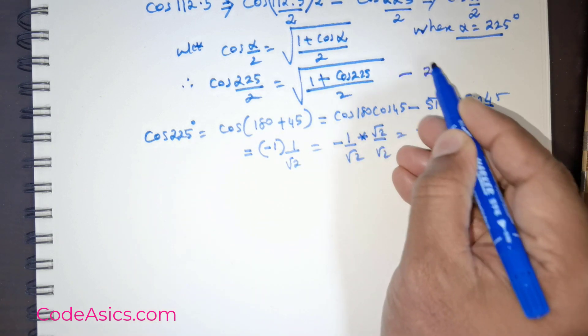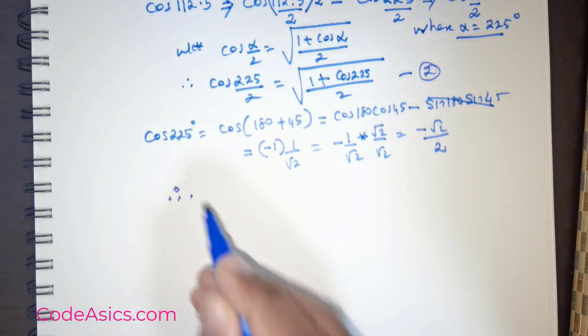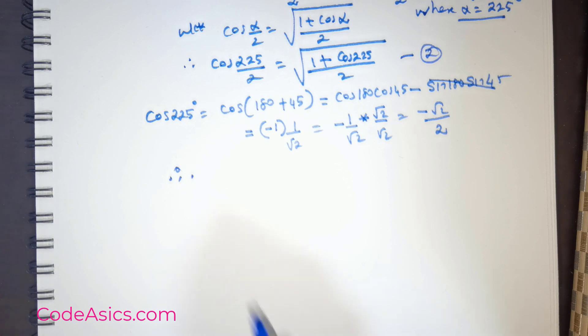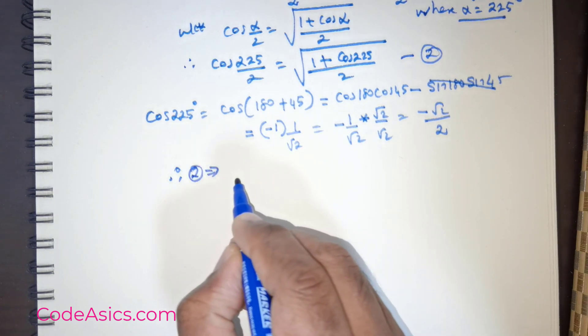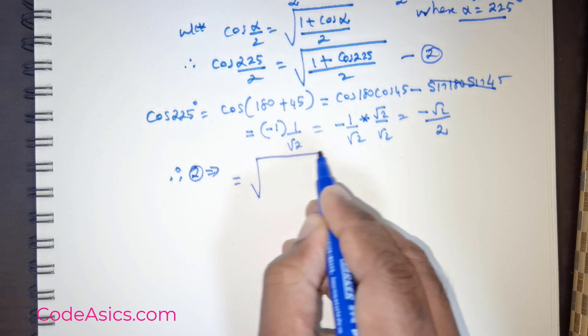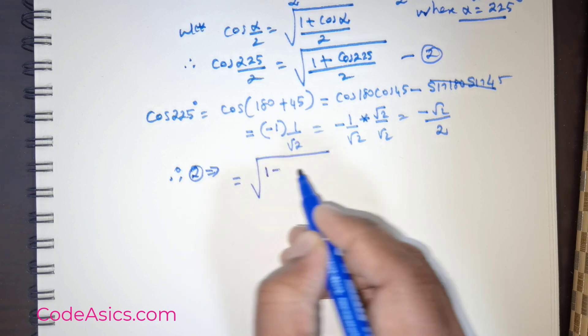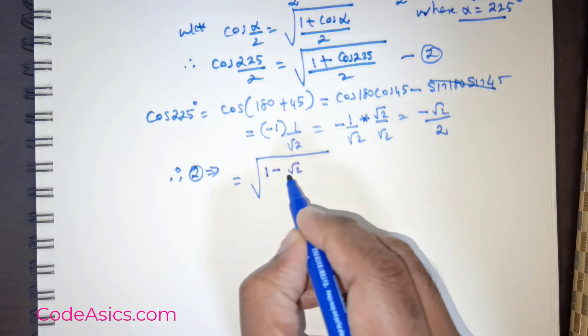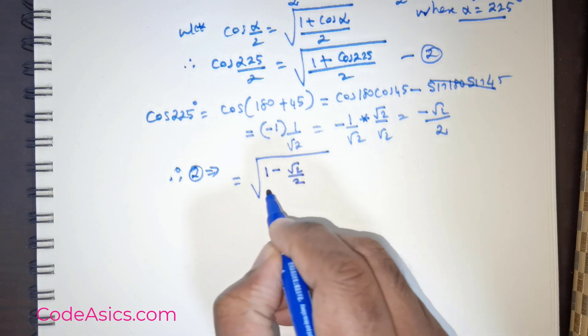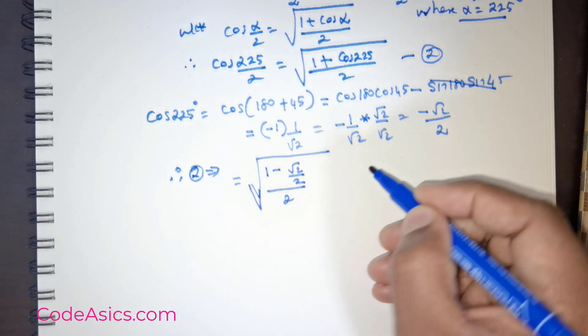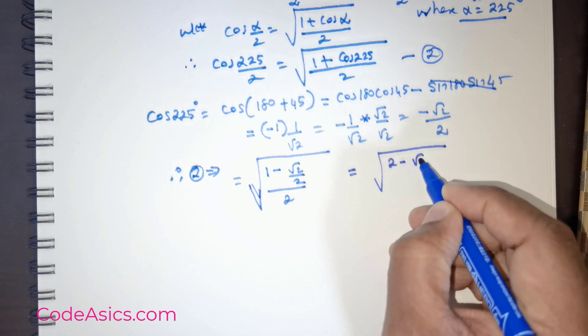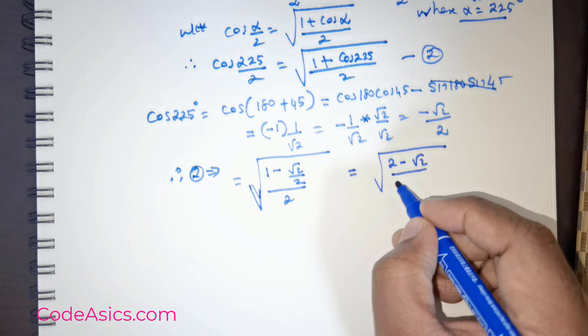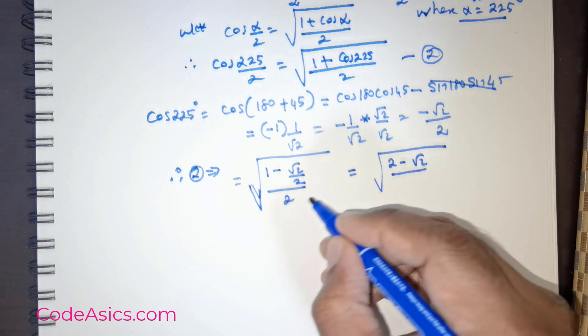If I take this value, I can state therefore cos(α/2) is rewritten as the square root of 1 minus root 2 over 2 divided by 2. The root actually flows over. This equals square root of 2 minus root 2 divided by 2. I already have 2 in the denominator here.